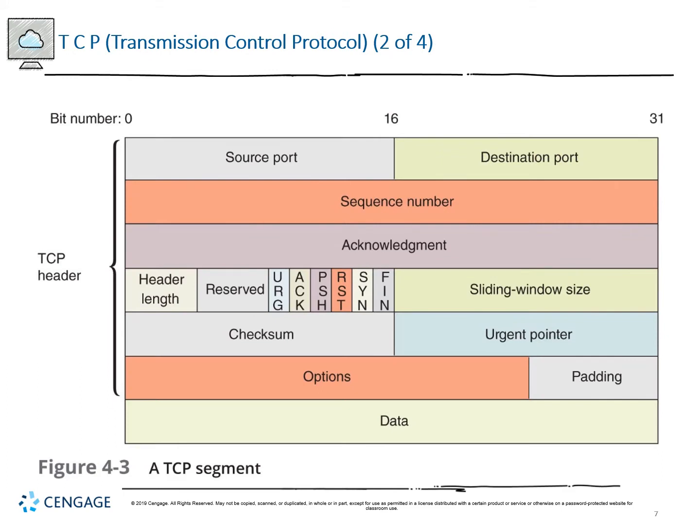A TCP segment includes many fields beyond the data itself. Looking at the header, we see source port, destination port, sequence number, acknowledgement flag field, header length, flags (the three-character representations), sliding window size for flow control, and options and padding. The data portion can be different sizes based on the MTU — maximum transmission unit. The header contains a lot of complex information, meaning it has a high amount of what's called overhead.